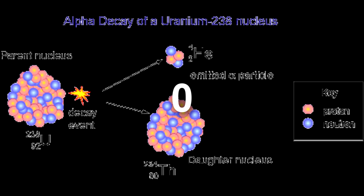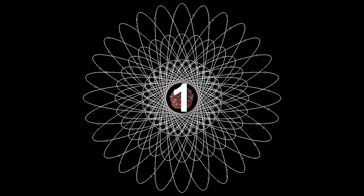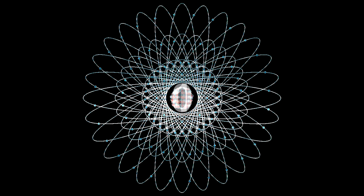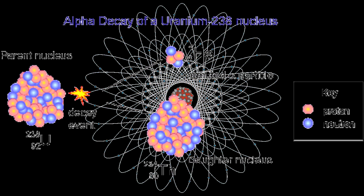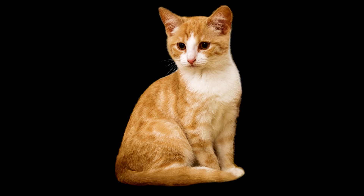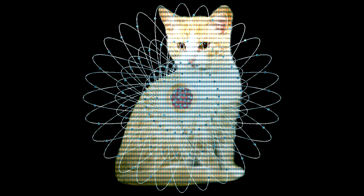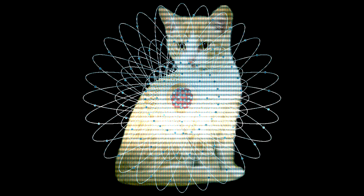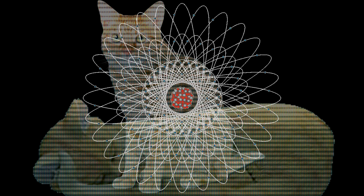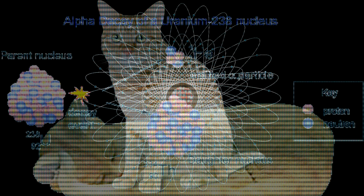If you say 0 is a decayed atom and 1 is an undecayed atom, and the atom is in a superposition of 1 and 0 at the same time, then the atom will be in a superposition of both decayed and not decayed. Since the cat's life depends on the state of the atom, logically the cat should be in a superposition too — both dead and alive at the same time, because the atom has decayed and not decayed simultaneously.